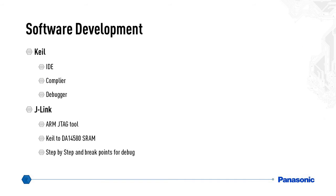The two major software development tools are the Keil, which acts as the IDE, the compiler, and the debugger. It will allow the user to modify code, compile it, and set up breakpoints if needed for debugging.